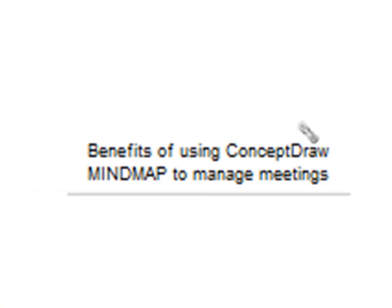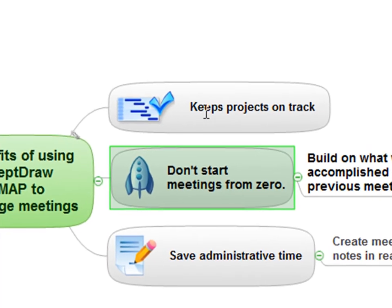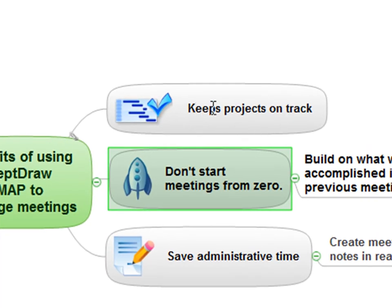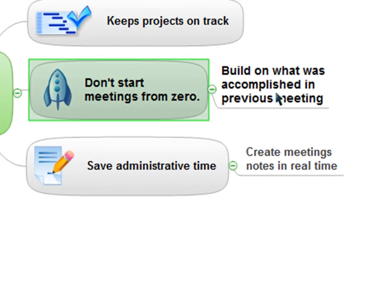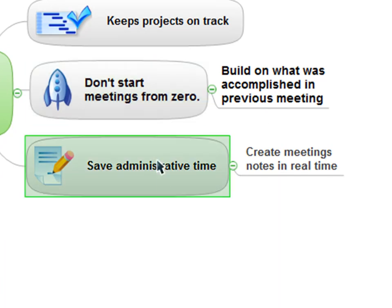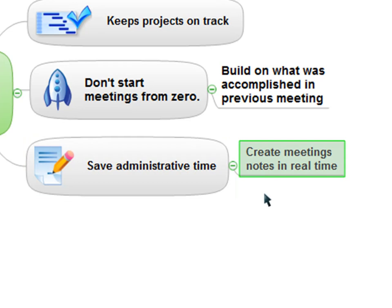Let's talk about the benefits of using ConceptDraw to manage meetings. You keep projects on track because people are able to put in their progress on projects, and you can pop them into the meeting map, open them up, and give people a quick update on everything the team is working on. You don't start meetings from zero — you build on what was accomplished in previous meetings. This also saves administrative time because somebody doesn't have to sit there and capture meeting notes. You don't have to waste administrative time creating a separate notes document and then circulating it for approval. You're creating your meeting notes in real time as part of the meeting process itself.